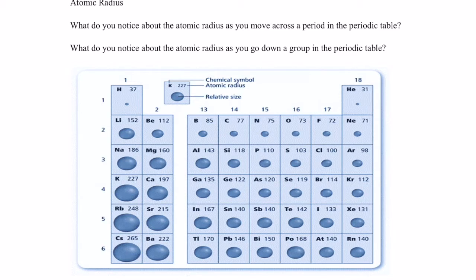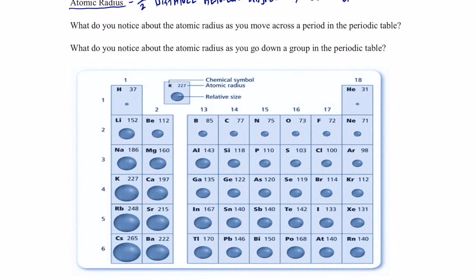Welcome back. We're continuing our discussion about periodic properties and we're going to spend time today talking about atomic radius, which I think is probably the most important of all the periodic properties. The definition we're going to use for atomic radius is one half of the distance between adjacent nuclei of bonding atoms.